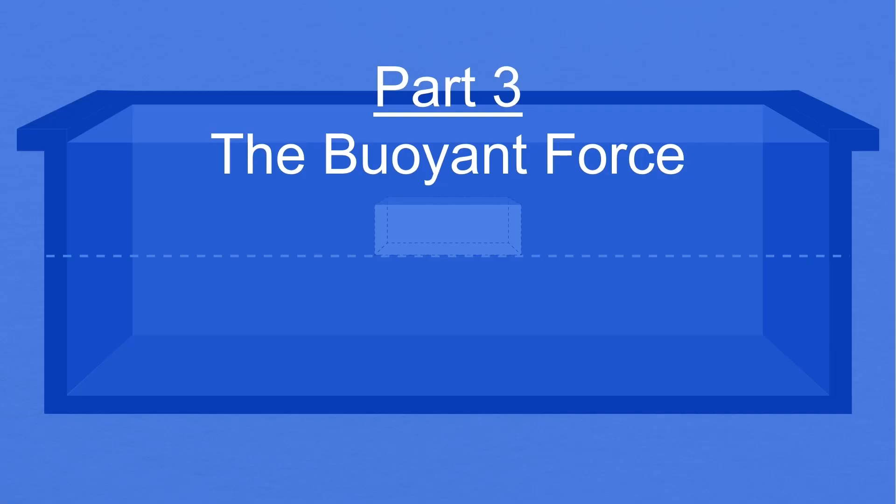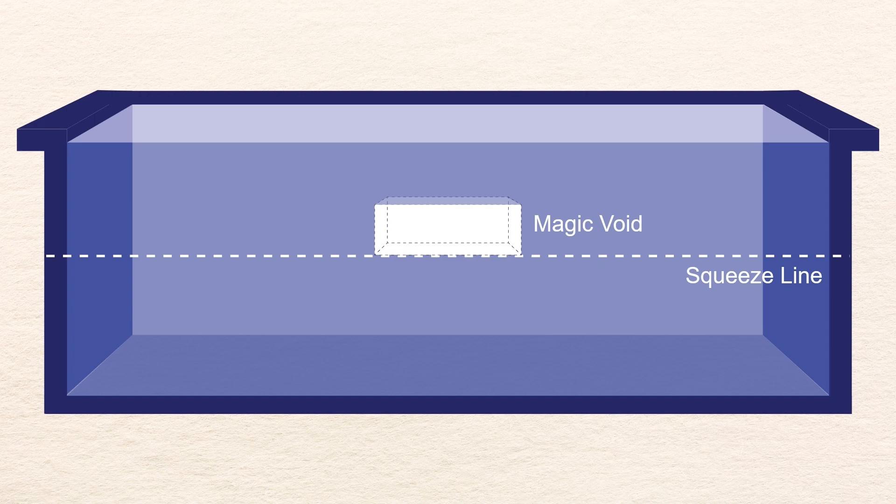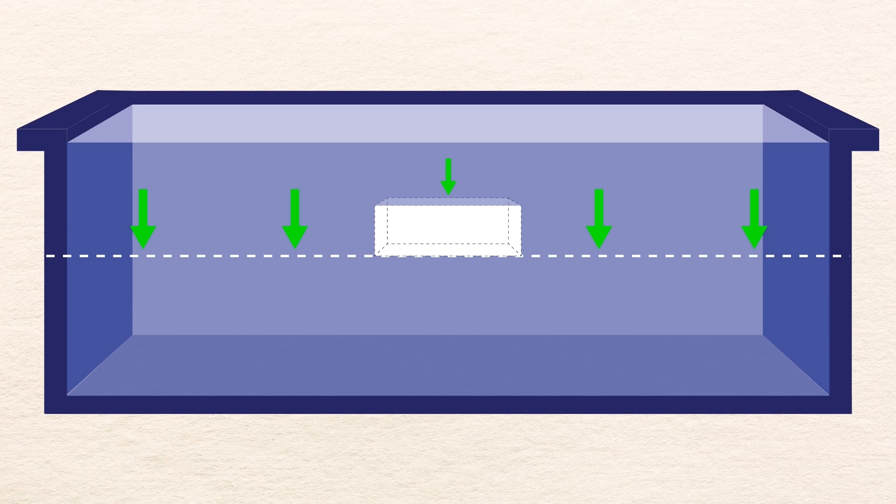Knowing all this, we are finally able to tackle how buoyancy works by seeing exactly where the buoyant force comes from. Let's add something to the pool that I call a magic void. A void because it's completely empty of matter, containing no molecules of any kind. And magic because, unlike a real void, the water doesn't come rushing into it. Instead, it behaves exactly as a solid does, keeping the water out and moving as a single object. Well, you can see right away that the magic void subtracts water from above the squeeze line. This means that the weight pressure above one part of the squeeze line is less than above the other parts.